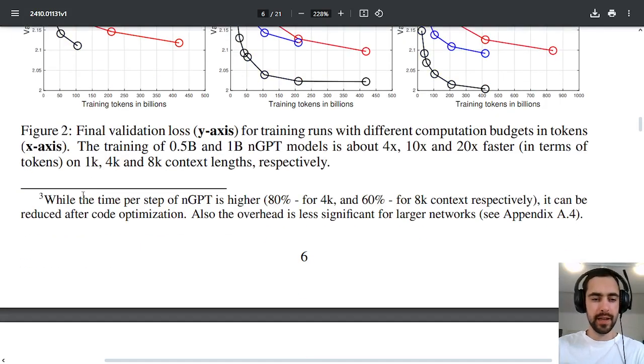And they also say while there is some increase per step, so 80% increase for 4k and 60% increase for 8k context respectively, first of all as you scale the context window the increase per step gets lower and lower and for large networks it's even less significant or maybe even negligible and also there can be code optimizations that will improve this further.